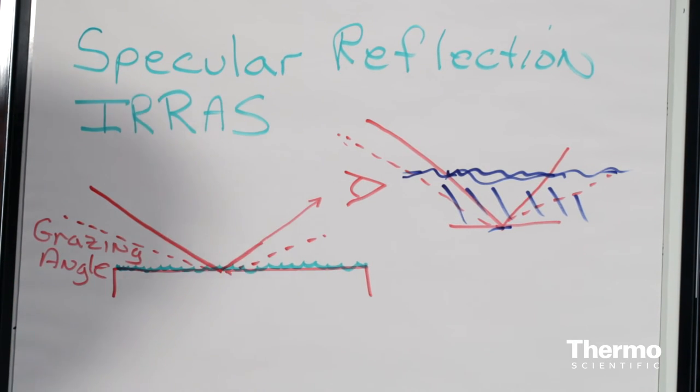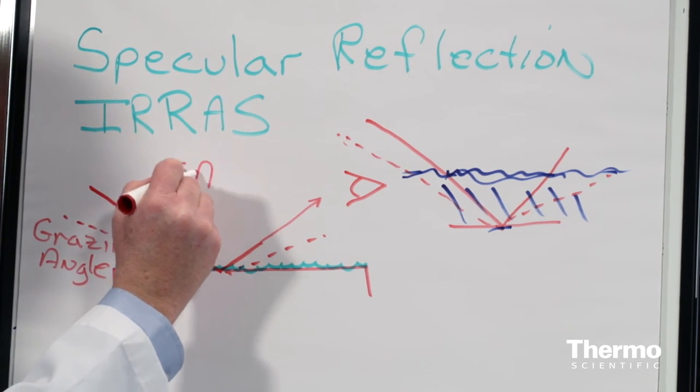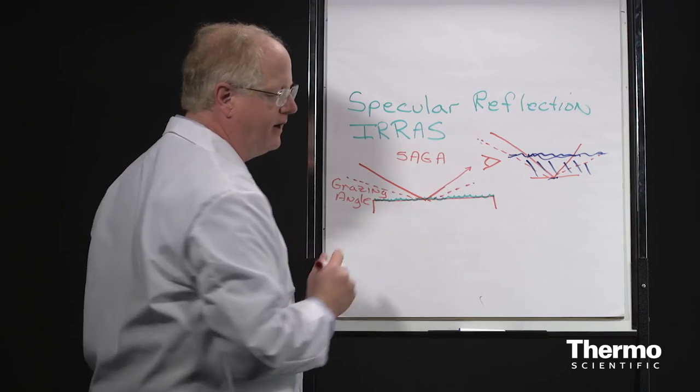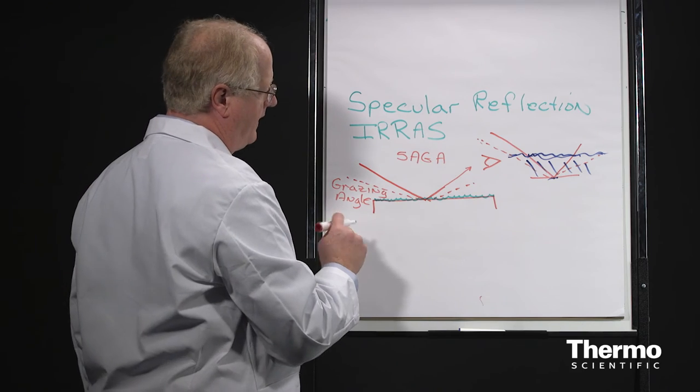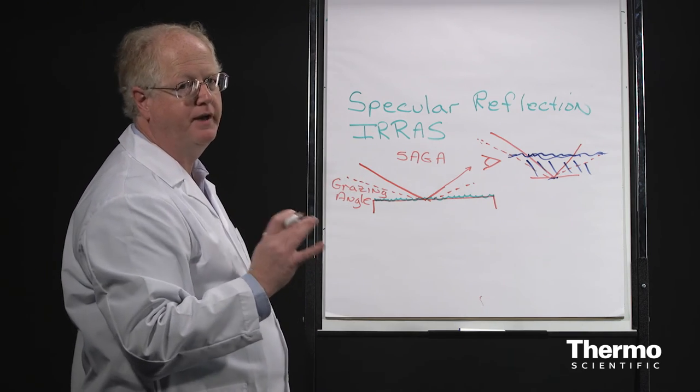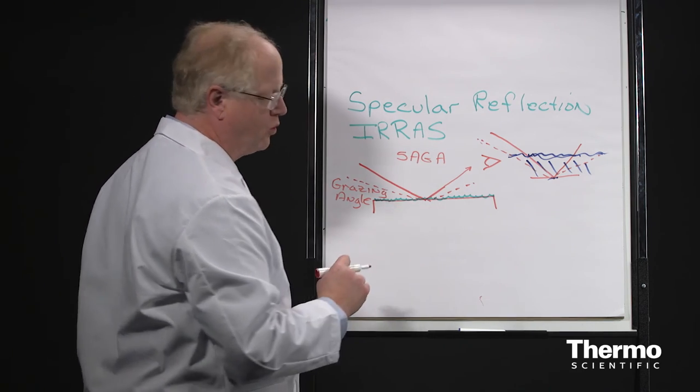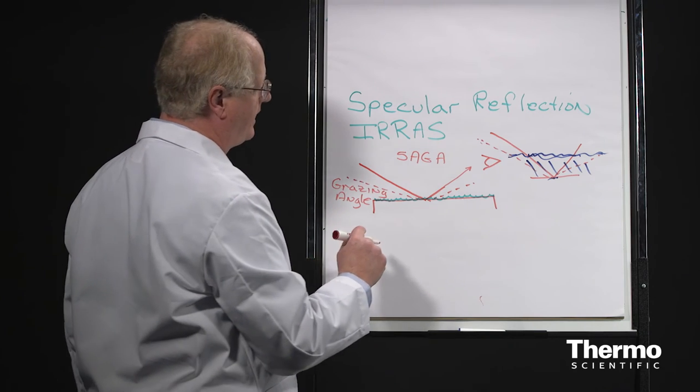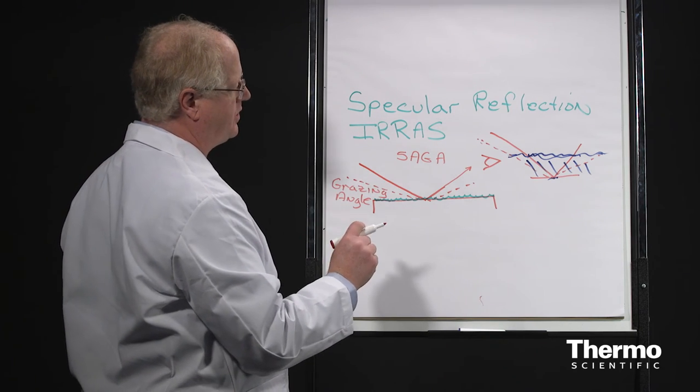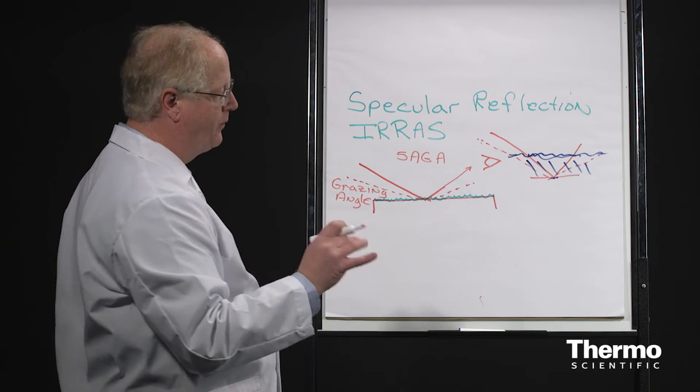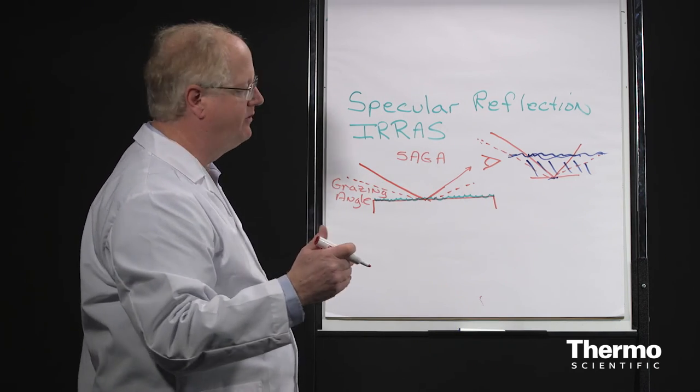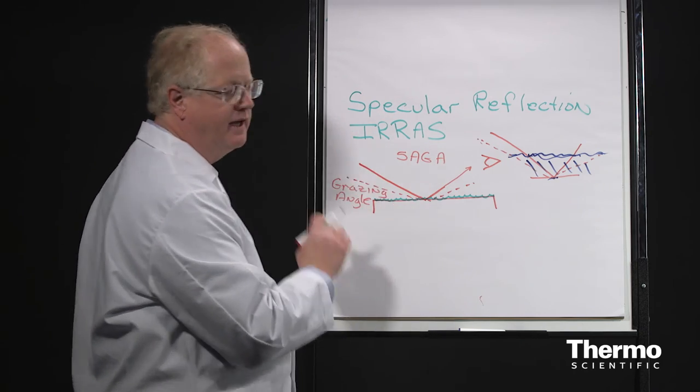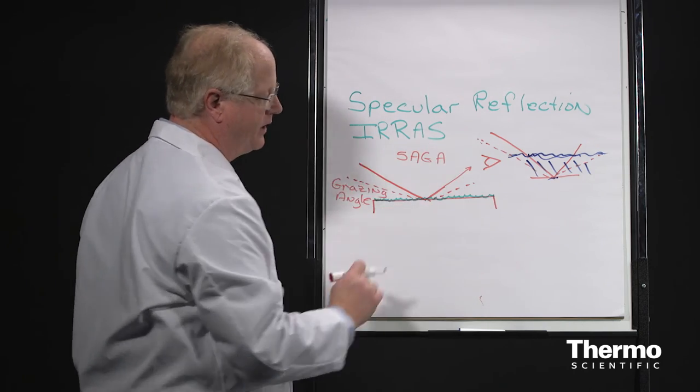And this is where the Sega accessory that we'll look at when we go into the lab, it's a grazing angle accessory. Another part of this is the fact that there is some polarization dependence of the light that's absorbed and reflected. We won't get into the details, but let's just say that one polarization gives you noise where the other one gives you signal. So the Sega actually has a polarizer built into it so that the light coming in is polarized in the direction that only gives you the signal.